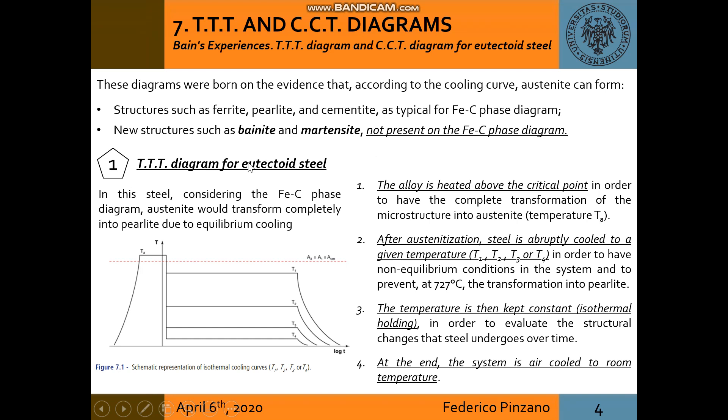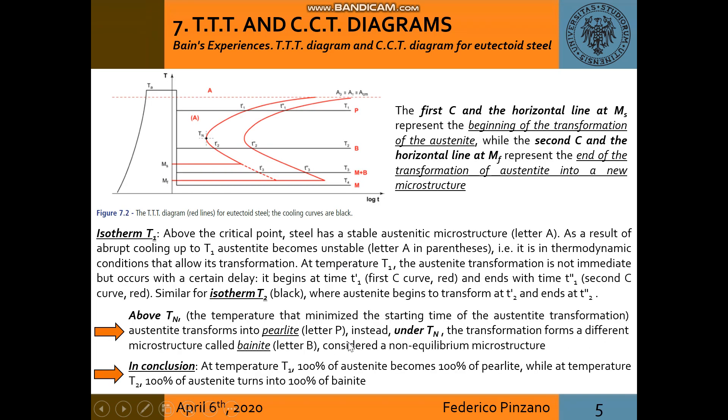Consider now a TTT diagram for eutectoid steel. The alloy is heated above critical point to have the complete transformation of the microstructure into austenite. Then steel is abruptly cooled. The temperature is then kept constant, and finally the system is air cooled at room temperature. The first C and the horizontal line at MS represent the beginning of the transformation of austenite, while the second C and the horizontal line at MF represent the end of the transformation of austenite into a new microstructure.